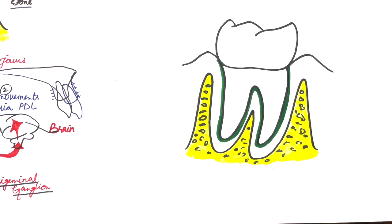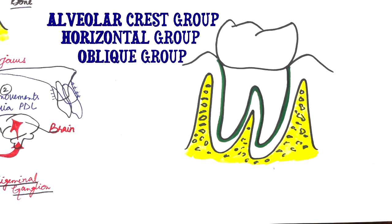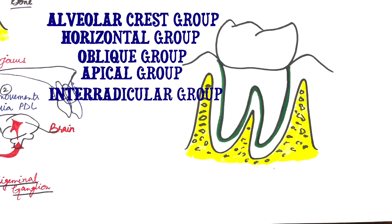These principal fiber bundles are the alveolar crest group, the horizontal group, the oblique group, the apical group, and finally the inter-radicular group.